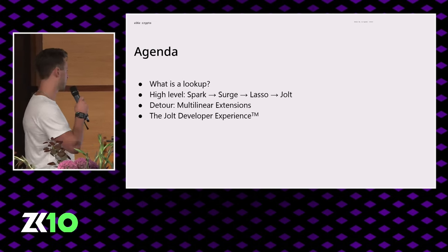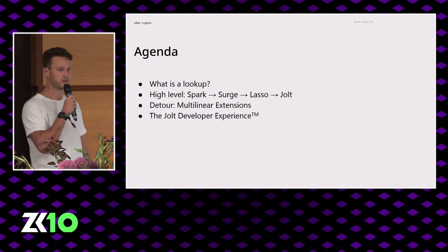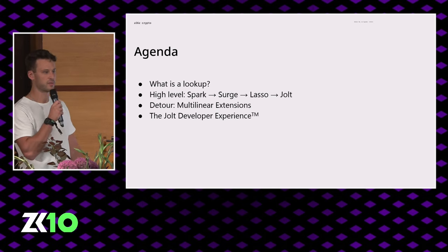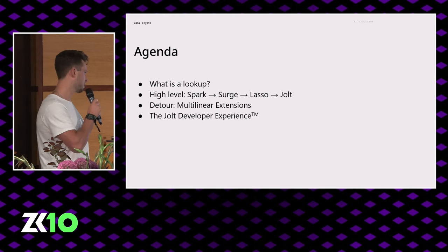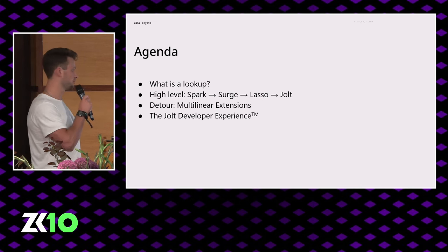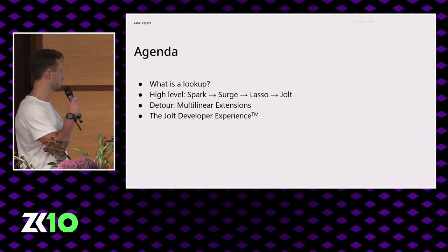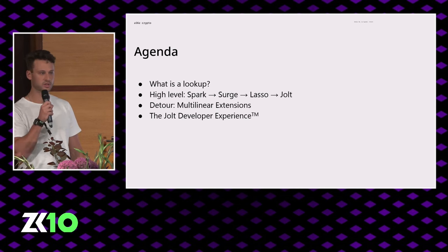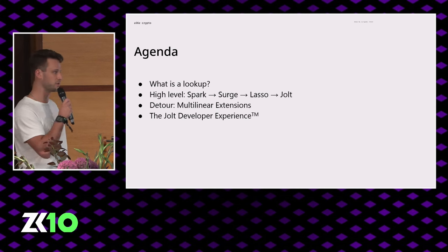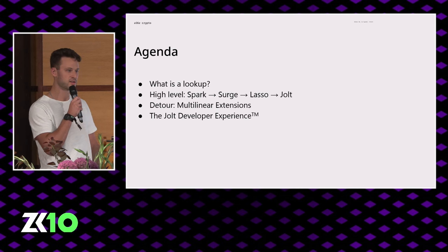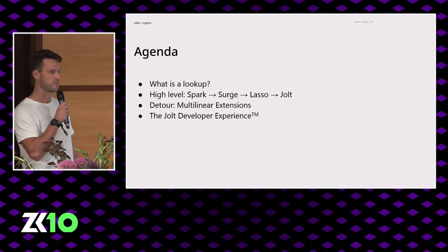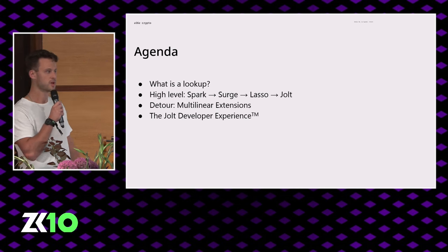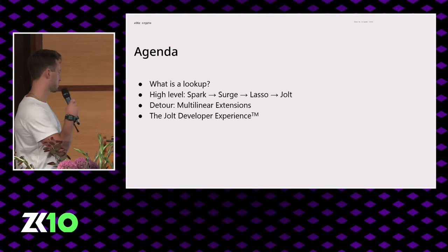In terms of an agenda, first we're going to do a little bit of background on what lookups are. Then we will give a high-level overview of the lineage of Spark, Surge, Lasso, and Jolt. Then we'll do a brief detour into multilinear extensions. And finally, we'll spend the majority of the time building a full single-instruction Jolt VM to show what that developer experience looks like.